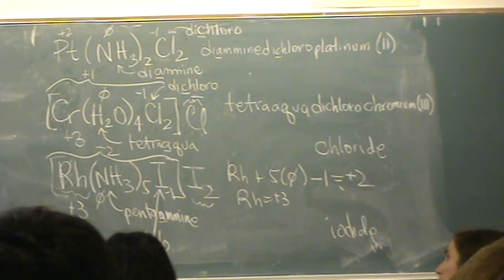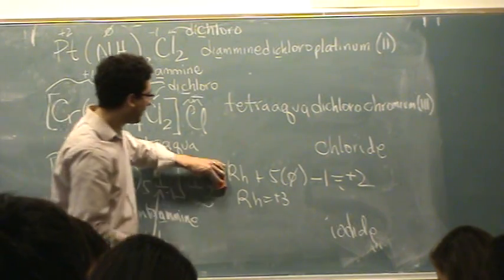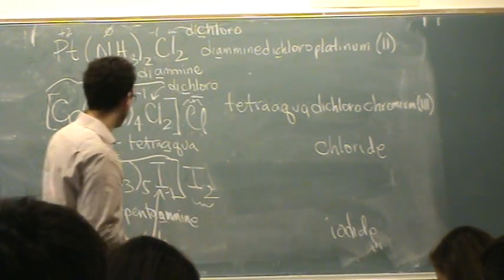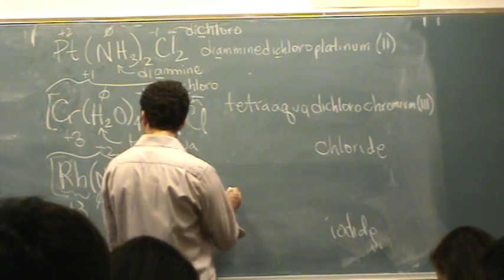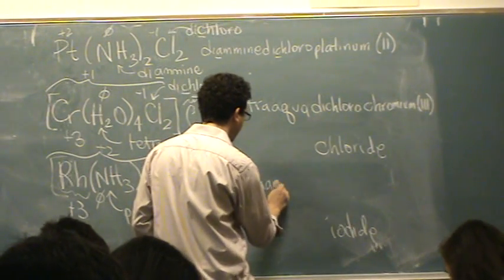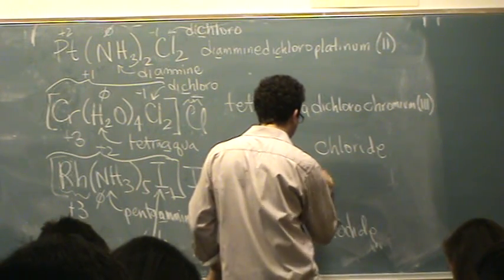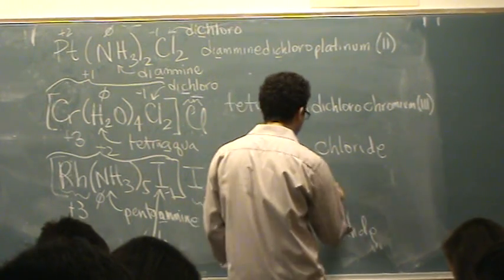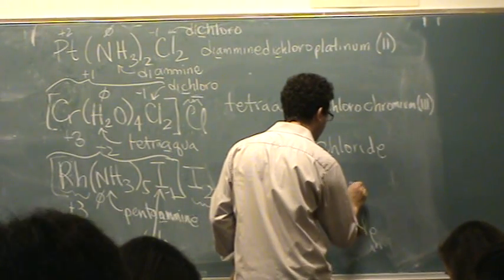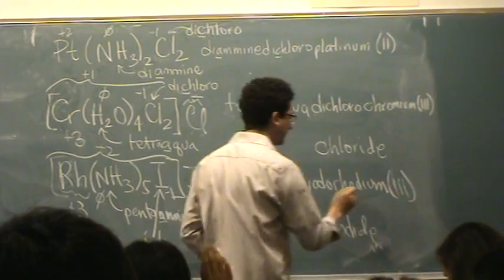I've got everything. I've got all the ligands. I know their alphabetical order. I know the metal. Its charge. So I can write it out now. This will be penta amine. What's next? Iodo. What's next? Rhodium. And one, two, three. Iodide.